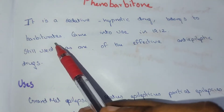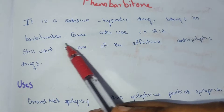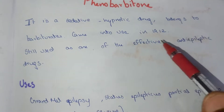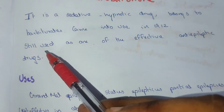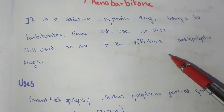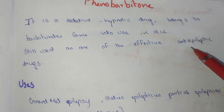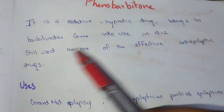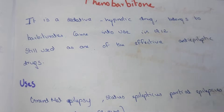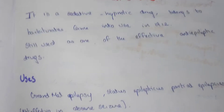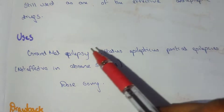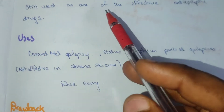Phenobarbital belongs to the barbiturate group of classification and came into use in 1912. It is still used today as one of the effective anti-epileptic drugs, used in the treatment of epilepsy.